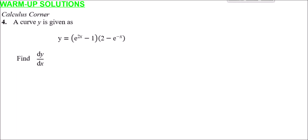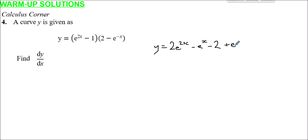Moving on to question four — the calculus corner. We have the curve y equals (e^(2x) minus 1)(2 minus e^(minus x)) and need to find dy/dx. First, expand the brackets: y equals 2e^(2x) minus e^(2x) times e^(minus x) minus 2 plus e^(minus x). When multiplying indices with the same base we add the powers: 2x plus minus x equals x, with a positive times negative giving negative. So y equals 2e^(2x) minus e^x minus 2 plus e^(minus x).